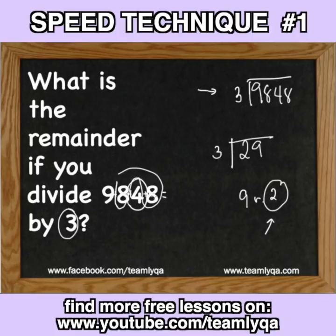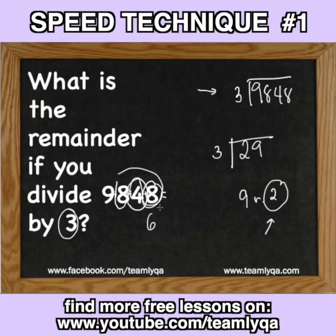Now, bakit? Kasi, again, kung ang number na nasa dulo nito would be 6, magiging 27 yung sum ng kanyang mga digits. Which, ibig sabihin nun, walang remainder kasi magiging perfectly divisible siya by 3. Pero dahil 8 ito, ibig sabihin, ang magiging sagot ay 2 kasi yung dapat na naging 6 ay naging 8.